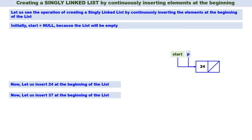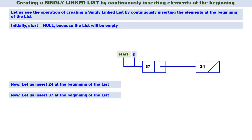Now let us insert 37 at the beginning of the list. 37, if it has to be inserted at the beginning, it has to be inserted before 24. Therefore we create a new node which is pointed by P and we put 37 into this node. The address part of P should not be null; instead, P of next should contain the address of the next node pointed by start. Therefore P of next is equal to start. Then start should contain the address of 37, so we change start. Now 37 is also inserted at the beginning of the list.